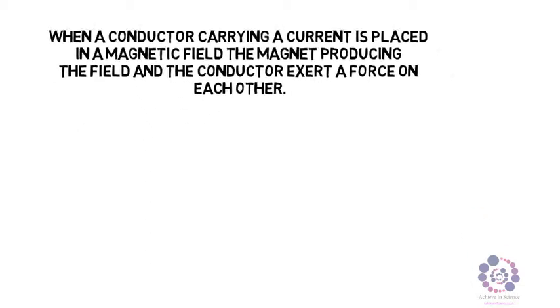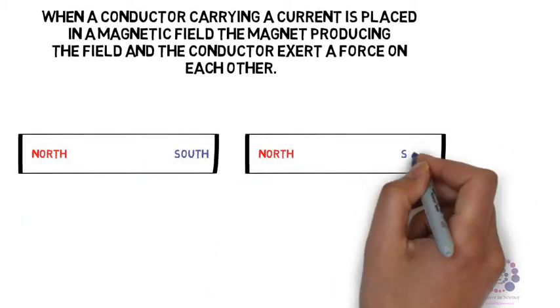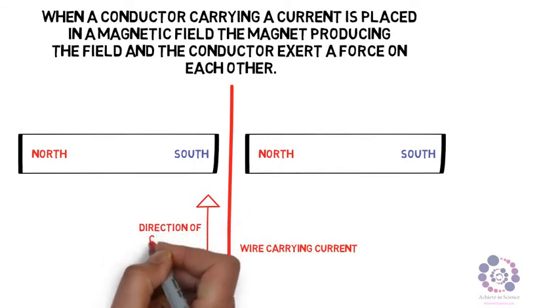Let's have a look at this in a diagram. So here we have two magnets. We have opposite poles on the magnets, and therefore we can now place a wire carrying current between them, where the current is going into the magnets as shown via the arrow on the diagram.